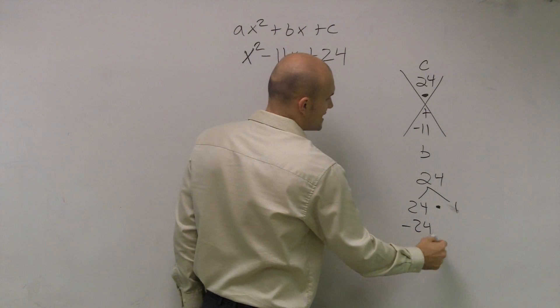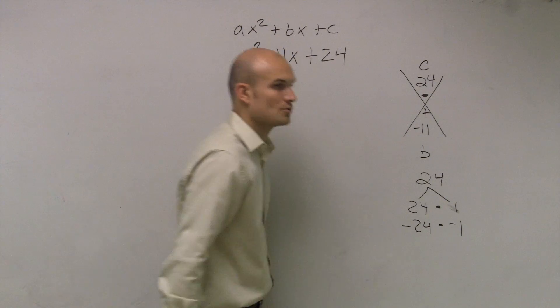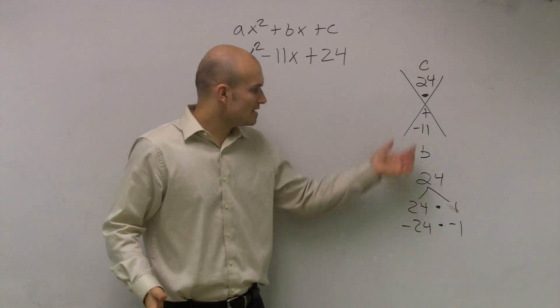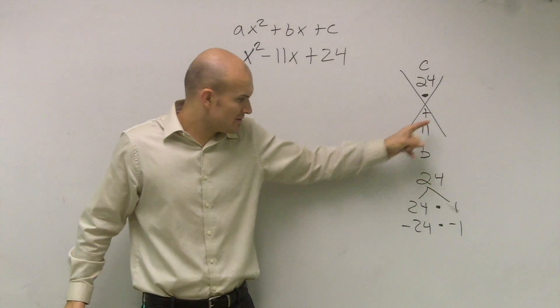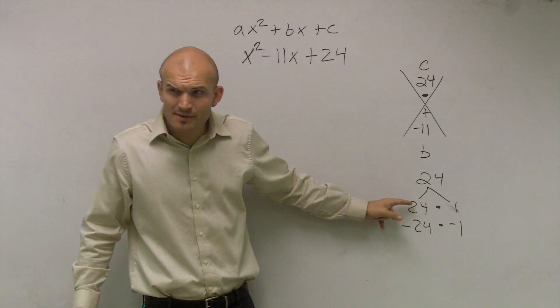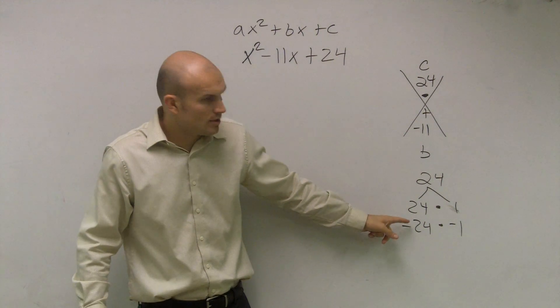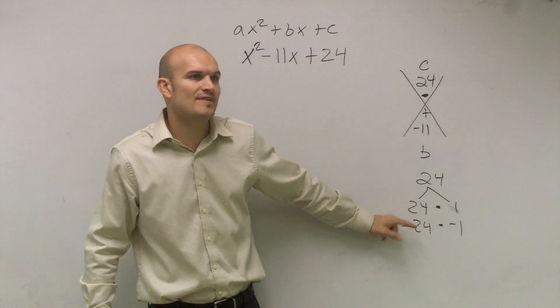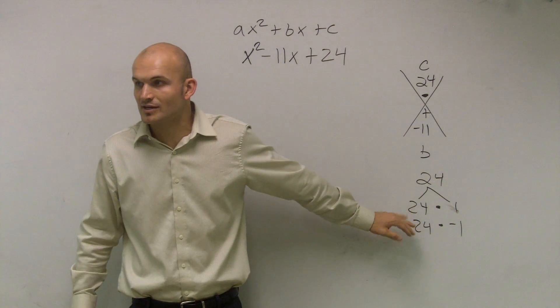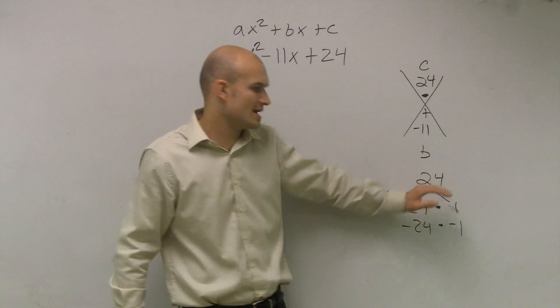Also, negative 24 times negative 1 also works. But remember, if we're going to be adding our numbers to get a negative number, would adding two positive numbers ever give you a negative number? No. So what we're going to look at is we just need to look at the negative factors. Why do we need to worry about the positive factors? Let's just work out when both factors are negative.